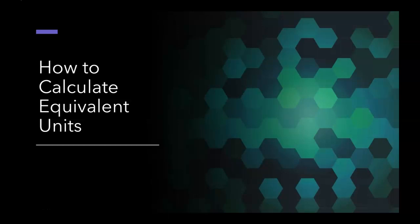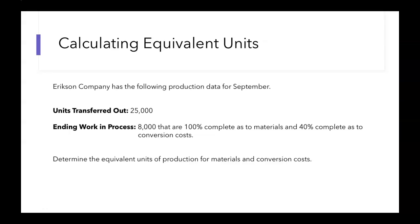Let's talk about how to calculate equivalent units. This example problem says Erickson Company has the following production data for September. They have 25,000 units that were transferred out, and then in their ending work in process they have 8,000 units that are 100% complete as to materials and 40% complete as to conversion costs. Now we need to determine the equivalent units of production for both materials and conversion costs.